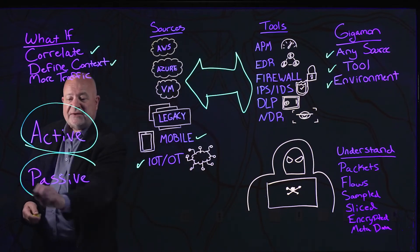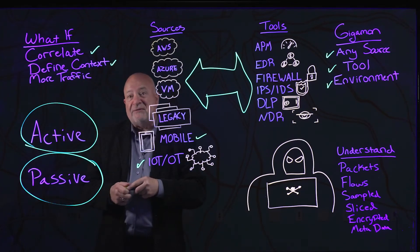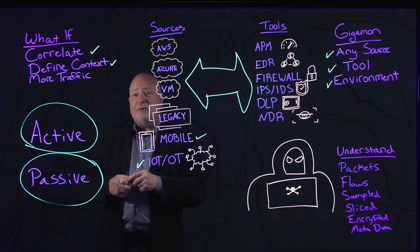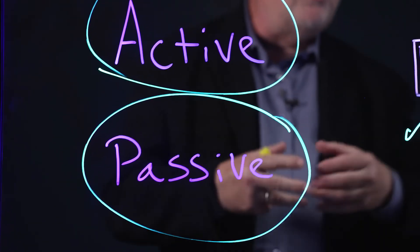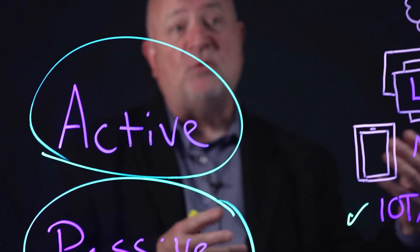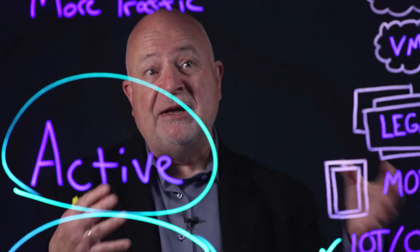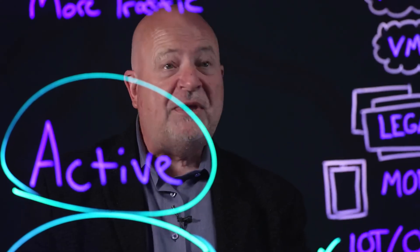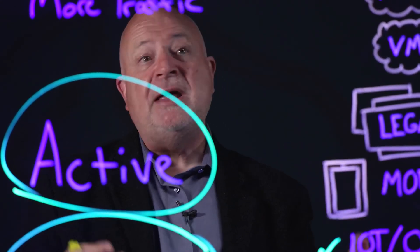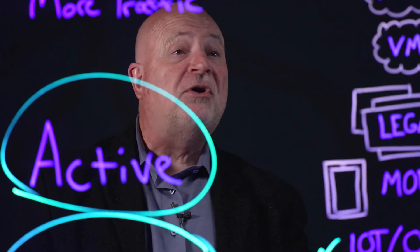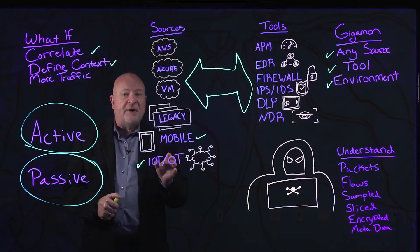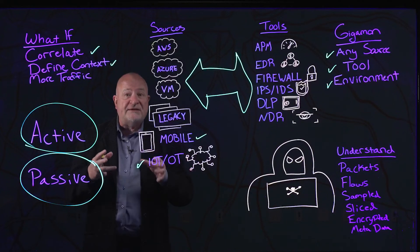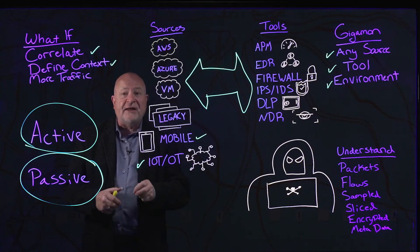Passive threats could be things like expired certificates. They could be unauthorized applications running on the network that maybe one business unit, one department, or one location thought was going to be useful — and probably is useful — but is not authorized. With the Gigamon Deep Observability Pipeline, we're pulling all of that together to give you this additional layer of defense in depth.